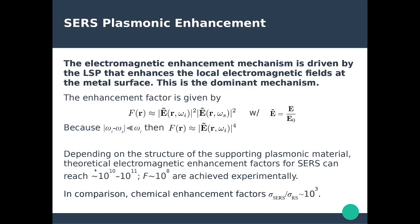Theoretically, you could enhance the Raman signal by a factor of 10^10 to 10^11 in the presence of gold or silver nanoparticles. Experimentally, due to additional effects, people have achieved SERS enhancement factors of 10^8. Comparing this to the chemical enhancement factor — the ratio between the SERS and regular Raman cross-sections — that is basically only 10^3. So the electromagnetic enhancement mechanism proposed by Van Duyne is much, much stronger than the chemical charge transfer mechanism proposed by Creighton.